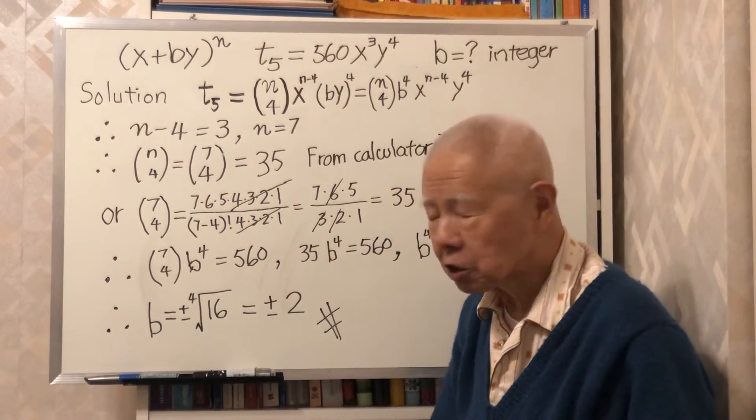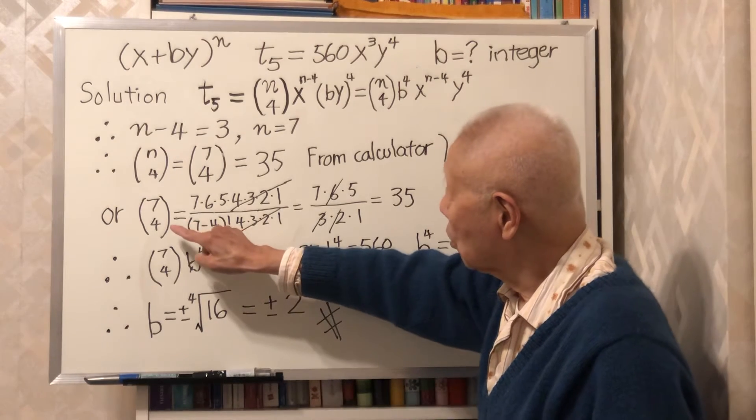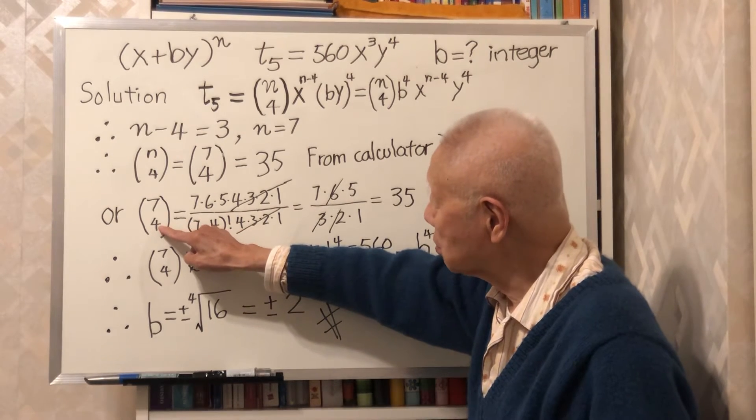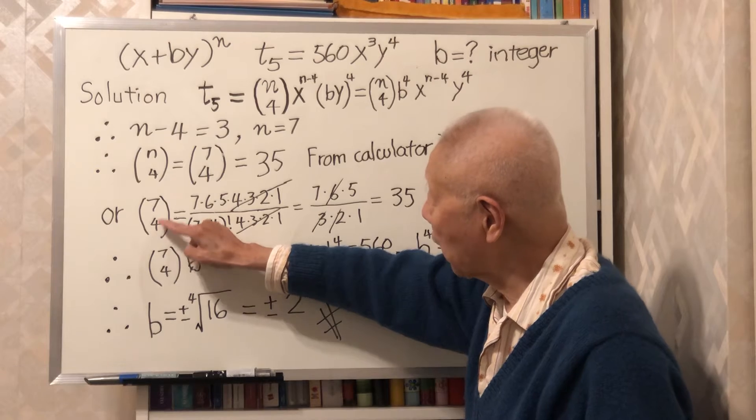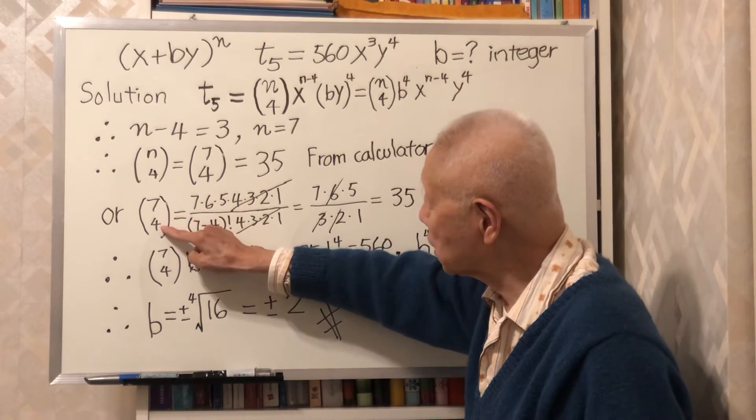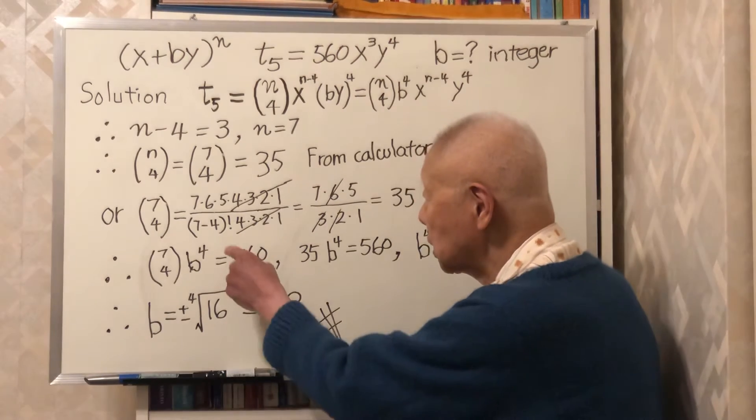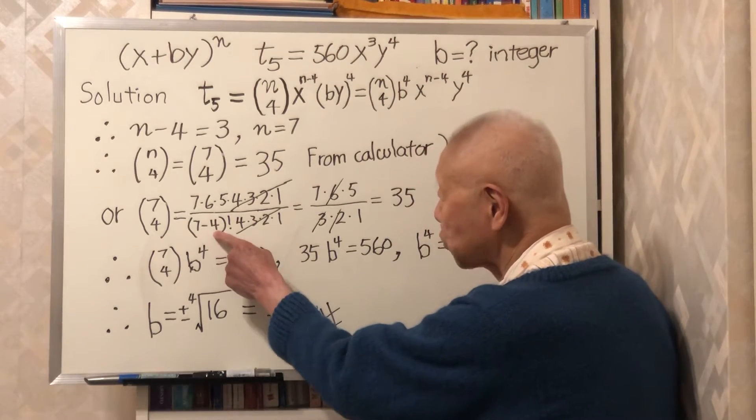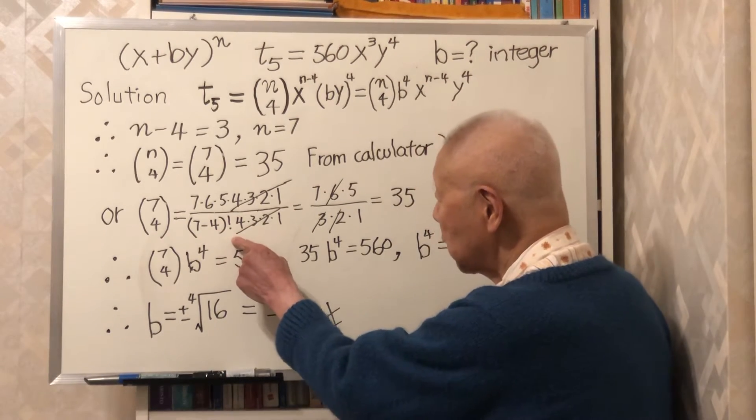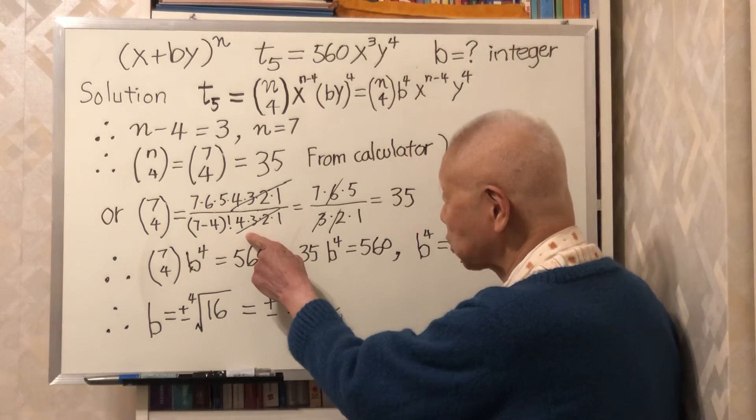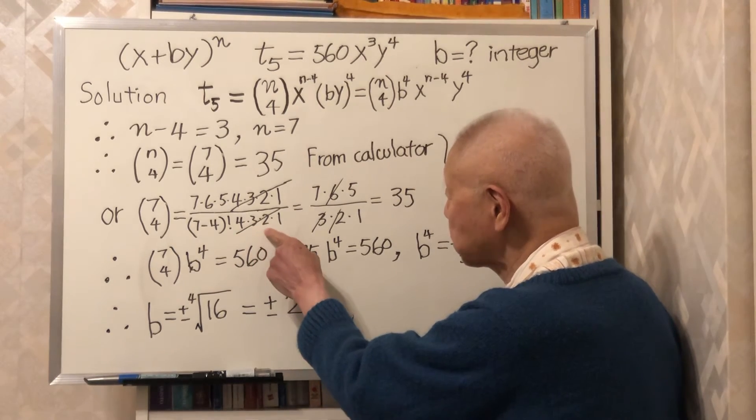But the denominator is 4 factorial multiplied by 7 minus 4 factorial. That's the denominator. So 7 minus 4 factorial and also you have 4 factorial, 4 times 3 times 2 times 1.